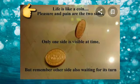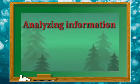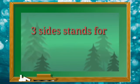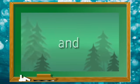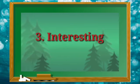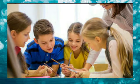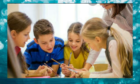So children, I think you have understood the meaning of the phrase 'two sides of the same story.' Coming to our topic — analyzing information using three sides — here, three sides stands for positive, negative, and interesting. Every situation we face can be looked at from these three perspectives: a positive point of view, a negative point of view, and an interesting point of view. When we analyze something, we have to keep these three sides in mind.